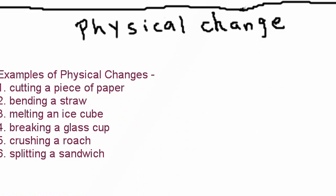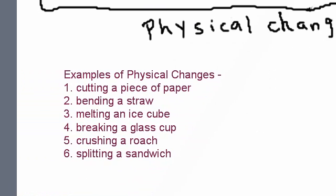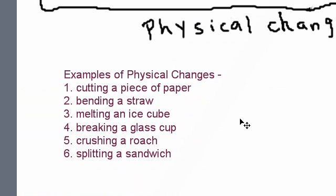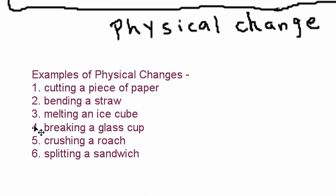Right here, I'm going to provide you with some examples of physical changes. If you see the word cutting, anything that has to do with cutting, like if you cut a piece of paper, that's an example of a physical change because it's not like the paper is going to turn into something else. It's not going to turn into a computer. It's still a paper. So that's an example.